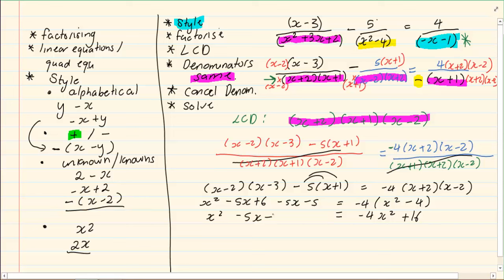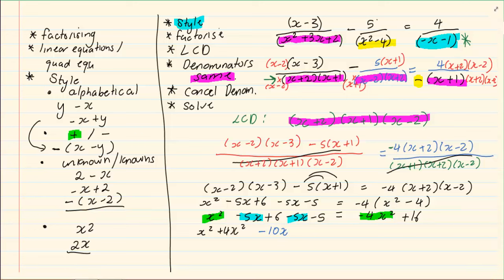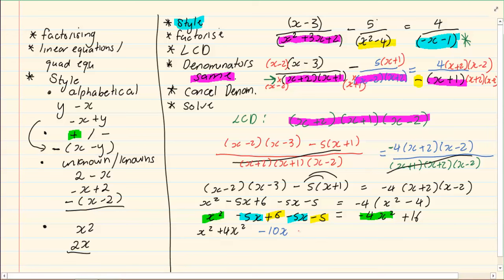This, we can just bring down. Then, I'm going to make it equal to 0. So, I have x squared, bringing my minus 4 over, becomes positive 4x squared. Then, I have minus 5x minus 5x, which is minus 10x. Then, we have our constants. 6 minus 5 is giving us plus 1. And we're bringing our 16 over, which gives me minus 16 equal to 0.